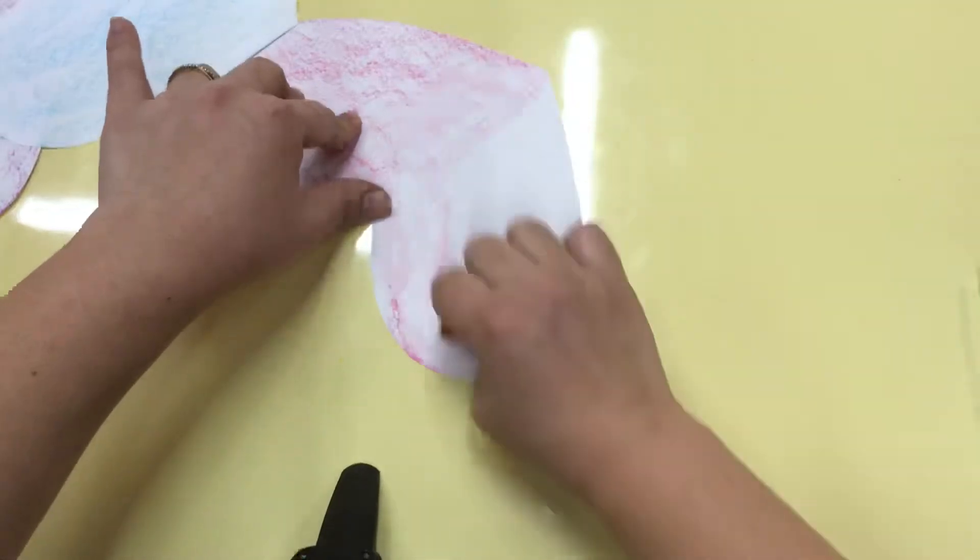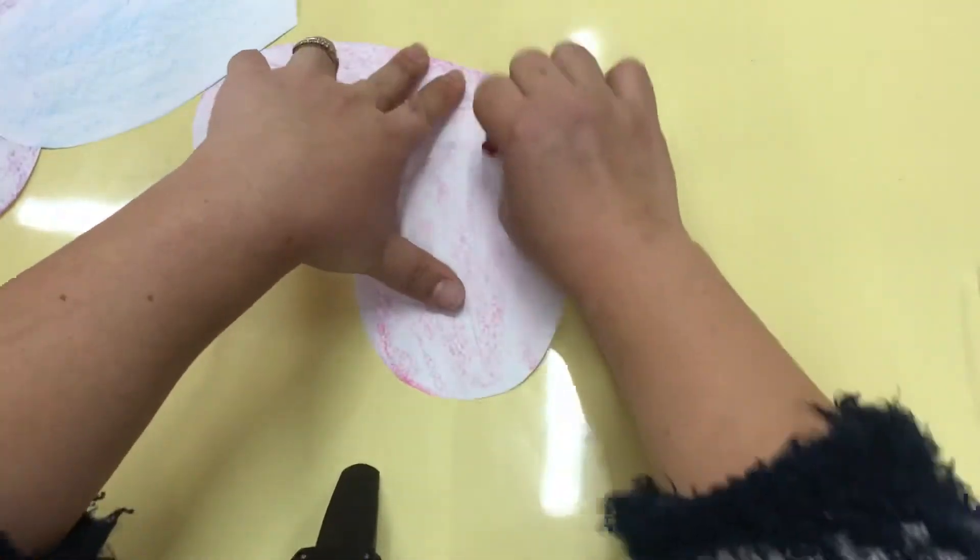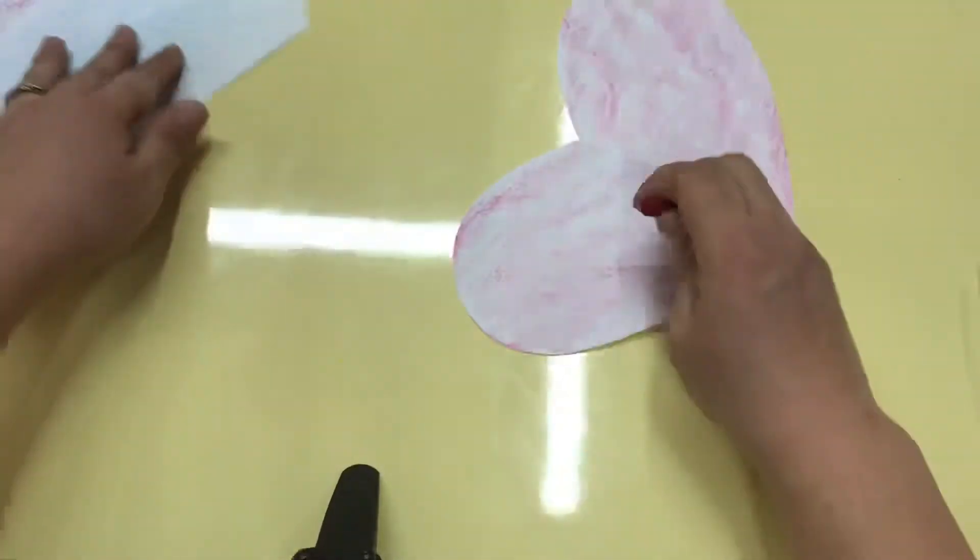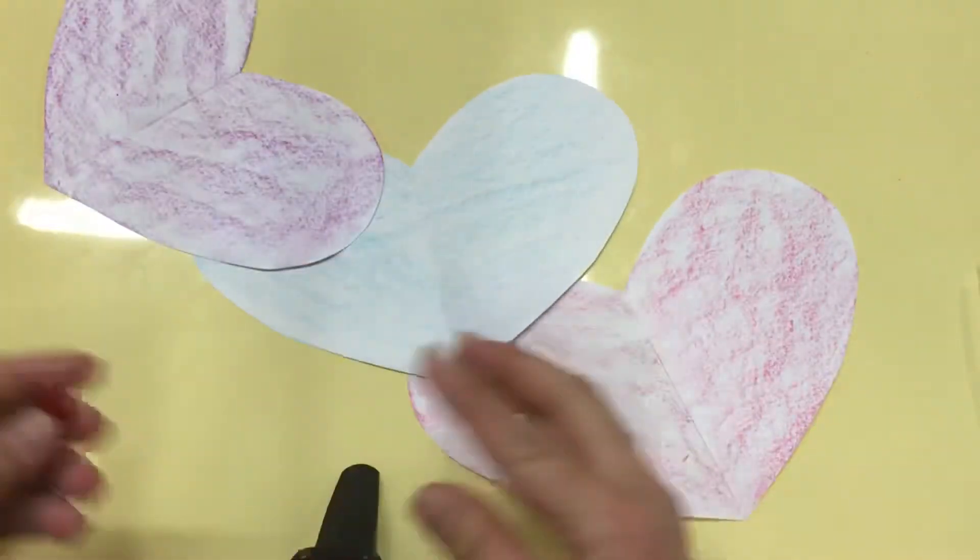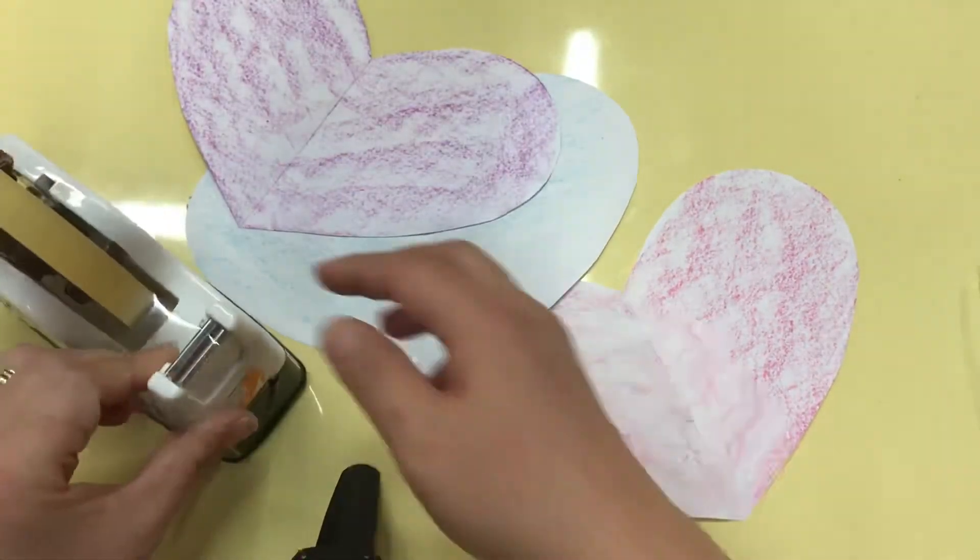And do the other side, too. See? Ta-da. Don't break my heart. My achy, breaky heart. Yes. So now you have your three hearts. Now you need your tape.